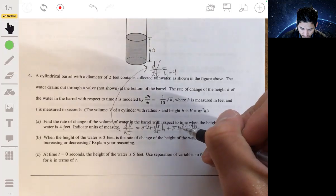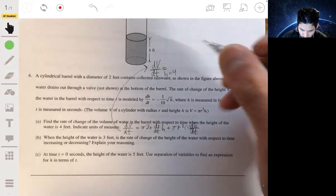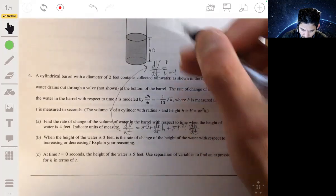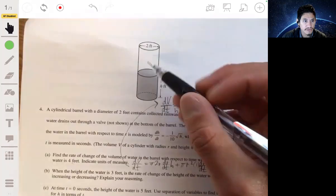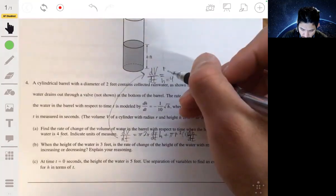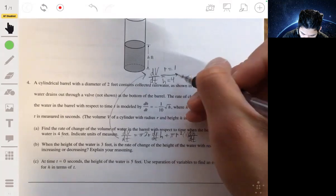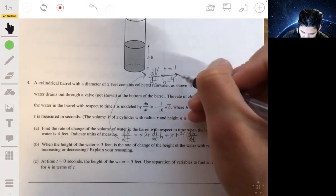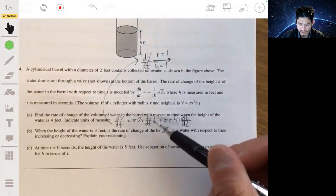Well, r is half of the diameter, and your total diameter is 2, so r is 1. Let's carry that over here. So r is 1, h is 4, but what's dr/dt? You're like, how do you figure that out?